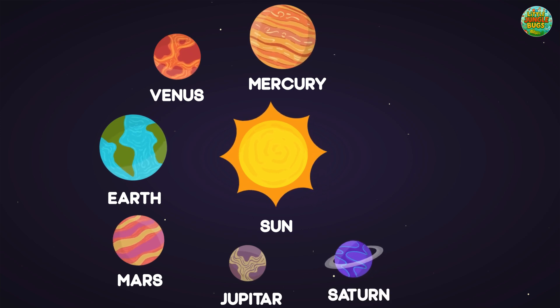Saturn. Saturn is famous for its beautiful rings. They're made of ice and rocks. Saturn is very big and cold.